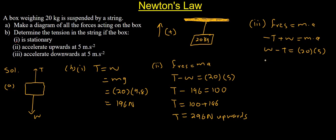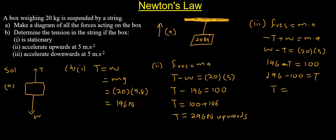Our weight is 196, so: 196 minus tension equals 20 multiplied by 5, which is 100. To make our tension positive, we transpose it to the right hand side and transpose 100 to the left: 196 minus 100 equals tension. Therefore our tension equals 96 newtons upwards, because tension acts in the opposite direction to weight.